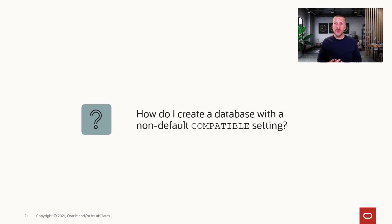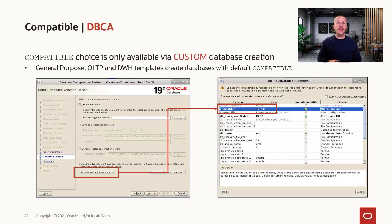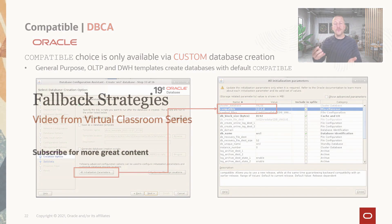When you are preparing and practicing your fallback scenarios, sometimes you need a database with a non-default compatible setting. If you just follow the wizard in DBCA — clicking next through the steps — or use a create database statement, you will end up with a database with the default compatible setting, which will be 19.00 for a 19c database. But sometimes we need a database with a non-default compatible setting, for instance one with a lower release value such as 12.2. In DBCA, you have to stop at one point and click the button for init parameters. It will take you to a different window where you can find compatible on the list and put in the desired value.